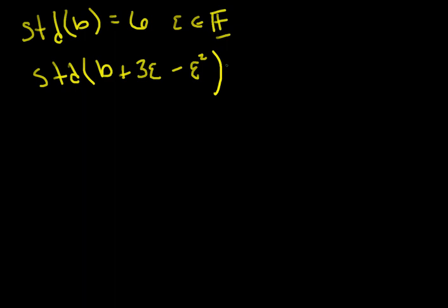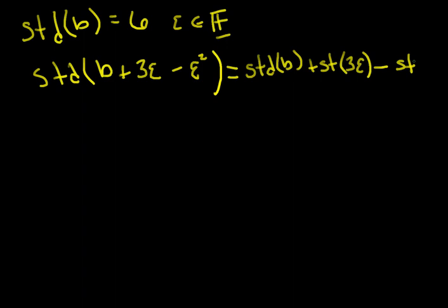I'm going to manipulate this step by step. Using the second part of the theorem, this is the standard part of B, plus the standard part of 3 epsilon, minus the standard part of epsilon squared. I've distributed across that.